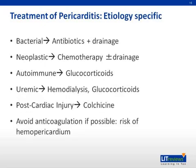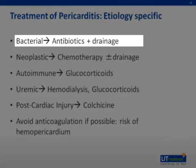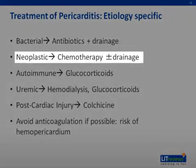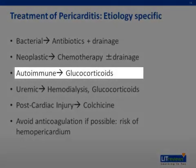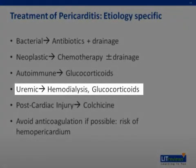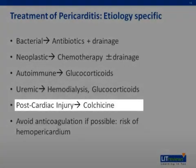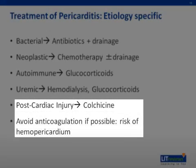Treatment of pericarditis based on other etiologies is specific to the underlying cause. Bacterial pericarditis will require antibiotics and drainage. Neoplastic causes will likely require chemotherapy plus or minus drainage for symptom relief and diagnosis. For autoimmune disease, we typically use glucocorticoids as the initial agent. For uremic pericarditis, we treat with hemodialysis and glucocorticoids. Post-cardiac injury pericarditis responds very well to colchicine. We recommend avoiding anticoagulation if possible due to the risk of hemopericardium.